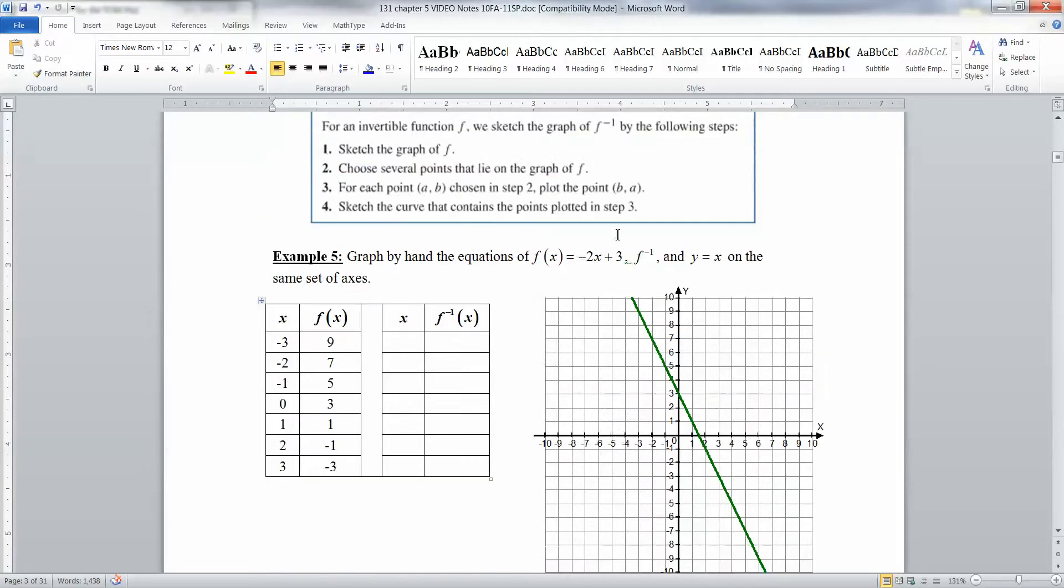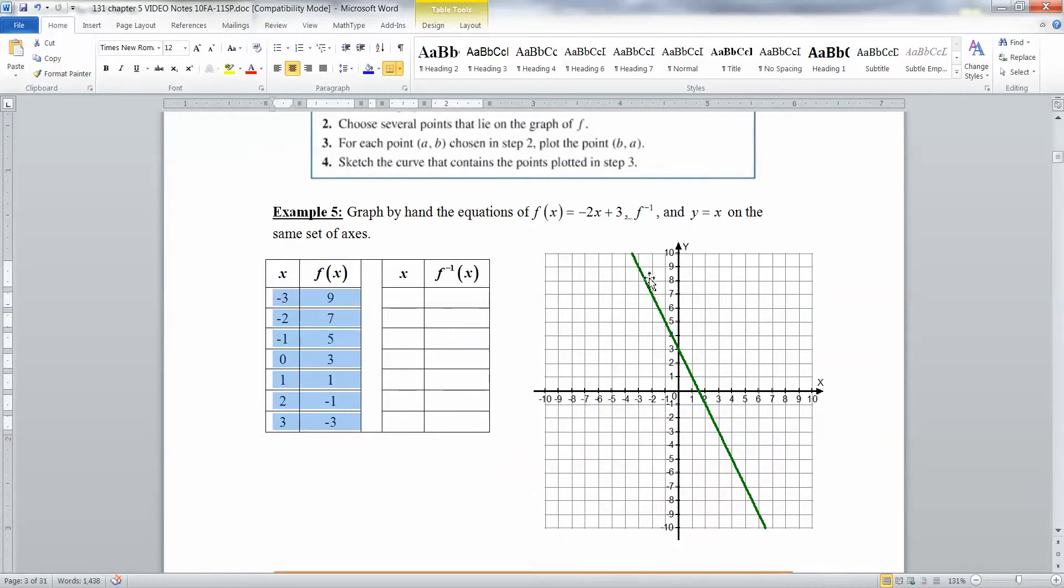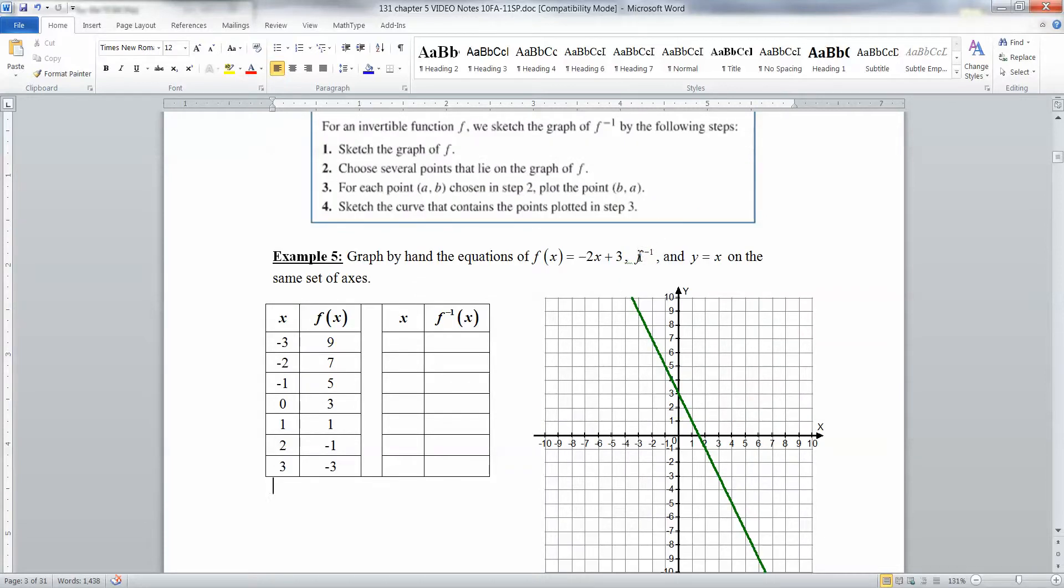So I kind of went opposite of what he said to do. I actually did step 2 first. I chose points and then graphed those points and drew a line. Remember, you're supposed to have arrows on either end of it, but I can't do that on the program I work from. And then it says it wants the graph of f inverse, and actually, y equals x as well.